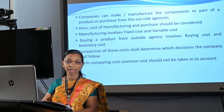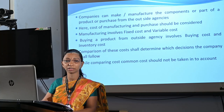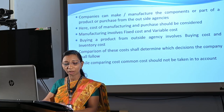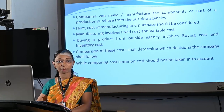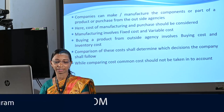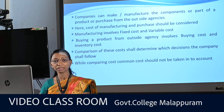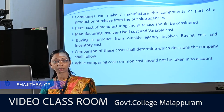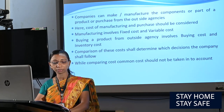Manufacturing involves fixed and variable cost. Fixed cost is for plant, machinery, building etc., and variable cost is the cost for labor, raw material, electricity etc. Buying a product from an outside agency involves buying cost and inventory cost. If we compare buying cost and inventory cost with manufacturing cost, then we can take a decision. This comparison shall determine which decision the company shall follow. If the cost involved in purchasing from the outside market is higher, then the company might go in for in-house production.